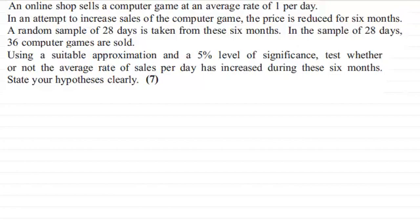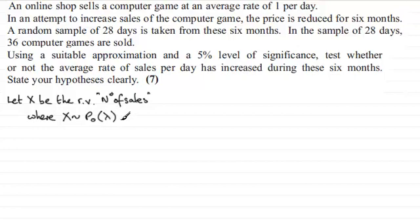Okay, welcome back. If you had a go, first of all what I want to do is set up our random variable. I'm going to call it X. Let X be the random variable, the number of sales. X will follow a Poisson distribution, so X is distributed as a Poisson distribution with a mean of lambda.